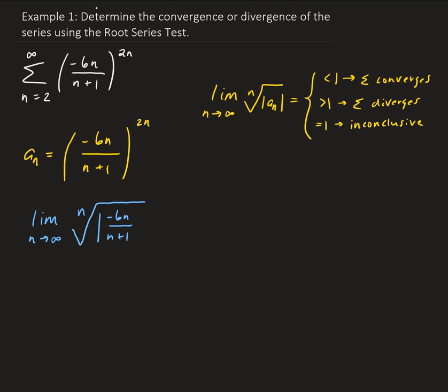So this is all getting raised to the 2n power. So I'm going to go ahead and take care of the absolute value. This is the same as the nth root of 6n all over n plus 1 to the power of 2n.